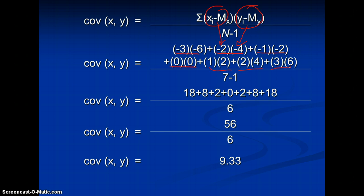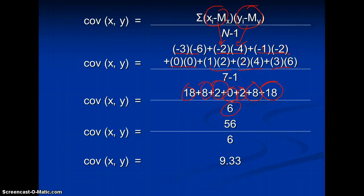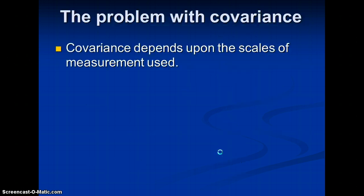Working through each pair: negative 3 times negative 6 is 18; negative 2 times negative 4 is 8; negative 1 times negative 2 is 2; 0 times 0 is 0; 1 times 2 is 2; 2 times 4 is 8; 3 times 6 is 18. N minus 1 is 7 minus 1 because we have 7 subjects, subtracting 1 for degrees of freedom, giving us 6.